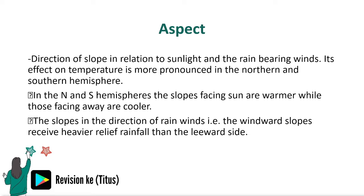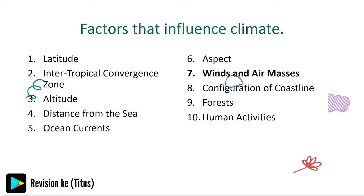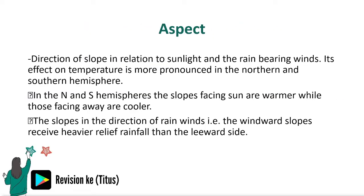In the northern and southern hemispheres, slopes facing the sun are warmer while those facing away are cooler. If you try to sketch the globe and map out where the equator runs, you'll be able to see this in a visual manner.